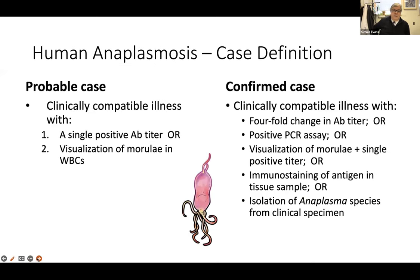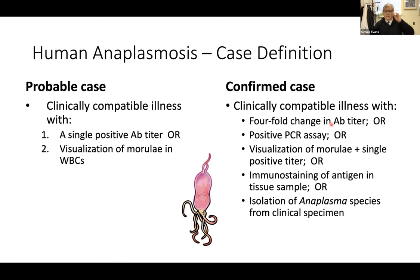It is now known as the cause of human granulocytic anaplasmosis, which was called human granulocytic ehrlichiosis when first described in the early 1990s. But it's been known as a disease present in animals going back to 1932, when it was seen in horses, sheep, and cattle. Here is an example of morulae contained within HL60 cells infected with Anaplasma. Case definitions: a probable case includes a clinically compatible illness with either a single positive antibody titer or seeing the morulae.